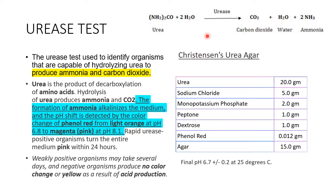You can see the reaction shown here. In the presence of the enzyme urease, it hydrolyzes urea — which is a product of decarboxylation of amino acids — to produce ammonia and carbon dioxide. The formation of ammonia alkalinizes the medium, shifting the pH towards alkaline, and this pH shift is detected by the color change of phenol red from light orange-yellow to pink.